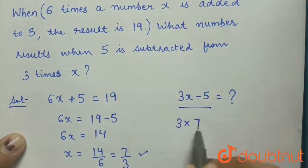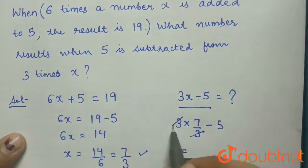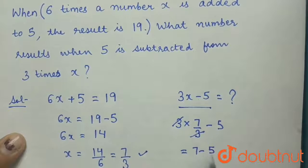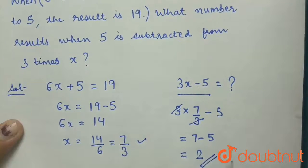we will get 3 multiplied by 7 by 3 minus 5, which gives us, 3 gets cancelled, 7 minus 5, which gives us 2, and this is our answer.